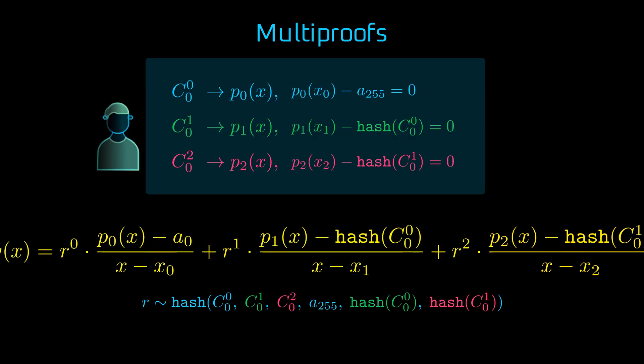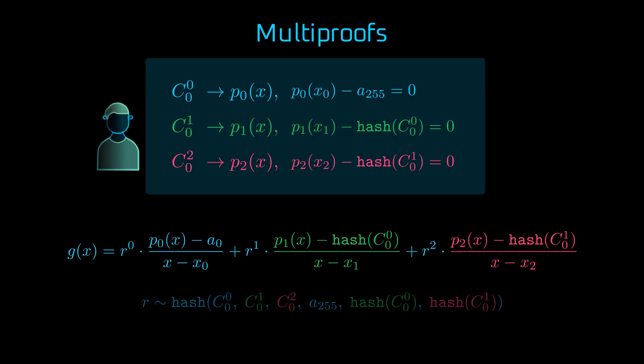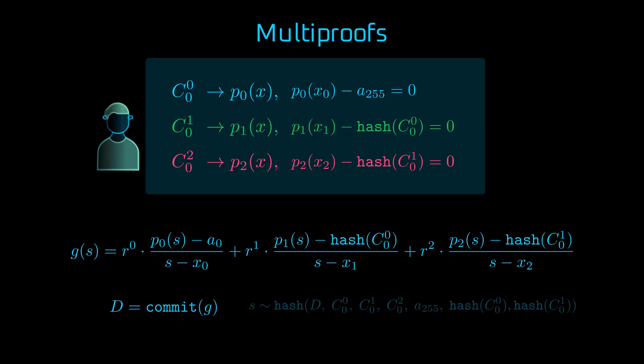Now, if we have a polynomial, we can commit to it using KZG, IPA, or some other polynomial commitment. This results in a commitment D. And depending on the scheme, we construct a single opening proof for some opening G of S, where S is another random coordinate. And this particular proof pi is a heart of our verkle multiproof.